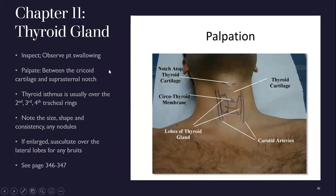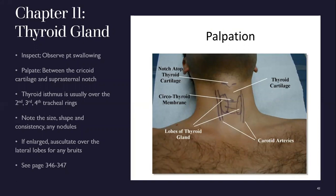Thyroid gland: first inspect — observe the patient swallowing; they don't need water, they can swallow on command. Then palpate. For the Week 7 assessment, verbalize the anatomical landmarks: the cricoid cartilage at the top, the suprasternal notch at the bottom of the neck, and the thyroid isthmus in between — overlying the second, third, and fourth tracheal rings. Note the size, shape, consistency (firm or soft), and any nodules. If grossly enlarged, auscultate over the lateral lobes for a bruit.